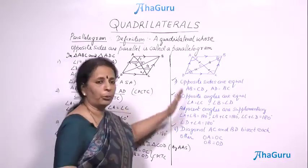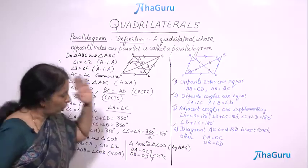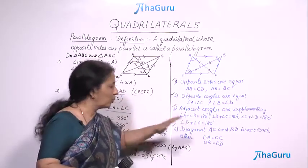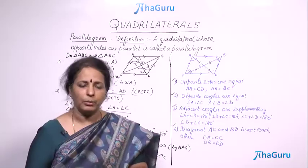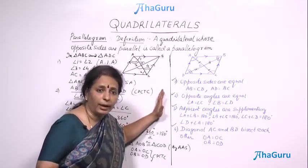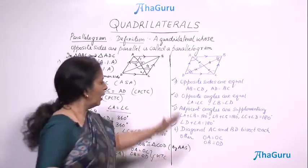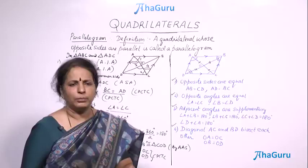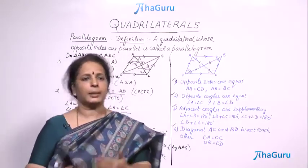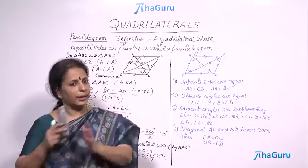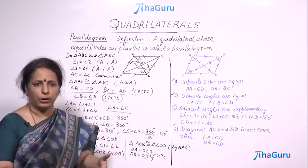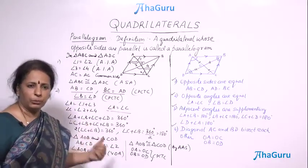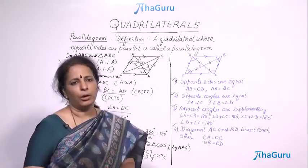So I have proved OA equals OC and OB equals OD — those are the four properties all proved. We will now take these properties as granted. Whenever we talk about a parallelogram, these properties hold and we need not prove them every time. A rectangle is a parallelogram with some extra properties — these base properties are still valid. Rhombus, rectangle, and square are all parallelograms with something extra. That extra is what we will prove separately — these four points we take for granted.